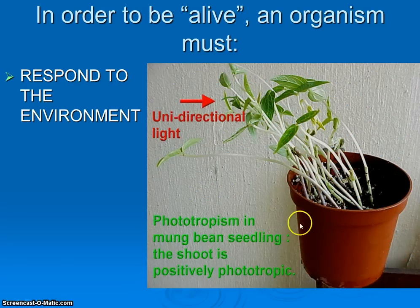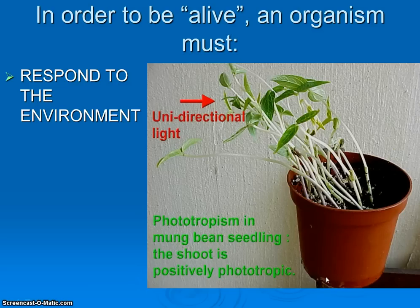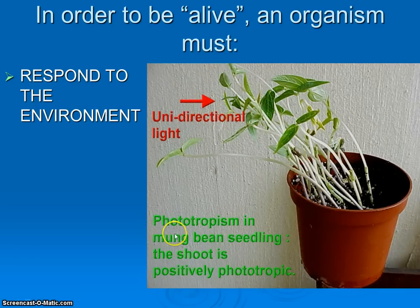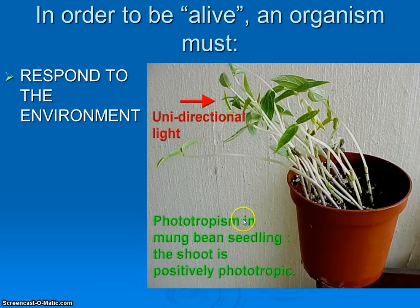Another example in terms of plants: notice what's going on here. The plant appears to be leaning and growing in one direction. The light is coming unidirectionally. This is an example of what is called phototropism. The bean seedlings are actually slowly growing towards the light. That is absolutely phototropism — absolutely a response to the environment.